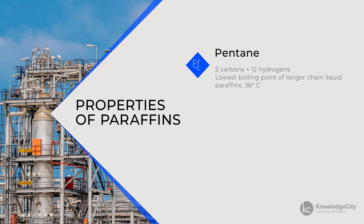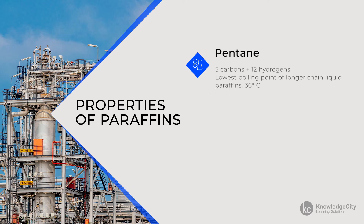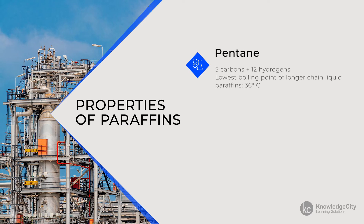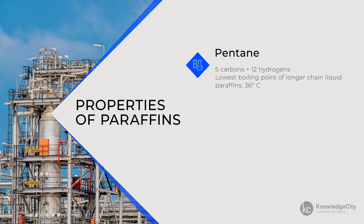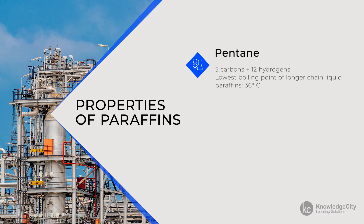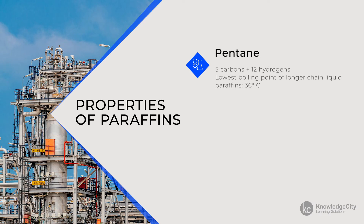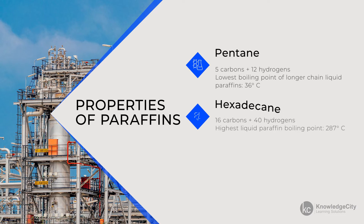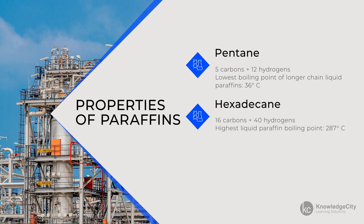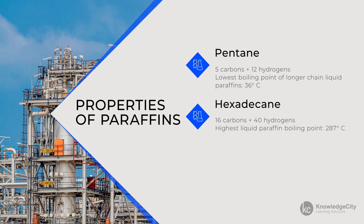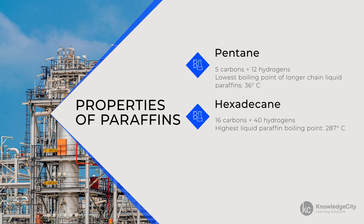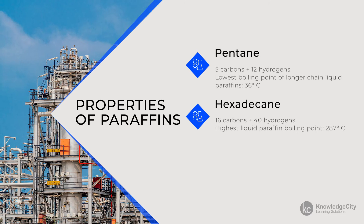Pentane, with 5 carbons and 12 hydrogens, has the lowest boiling point of these liquid paraffins at 36 degrees Celsius, which is only 11 degrees above room temperature. Hexadecane, with 16 carbons and 40 hydrogens, has the highest liquid paraffin boiling point at 287 degrees Celsius.